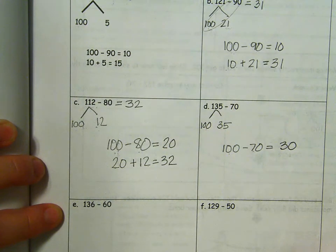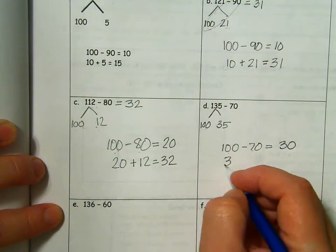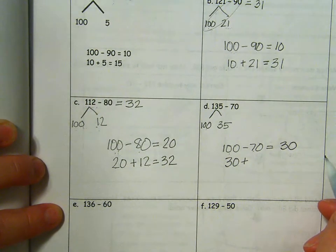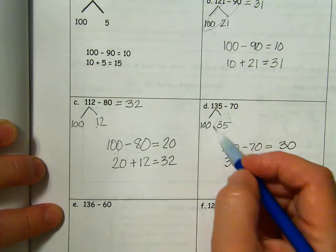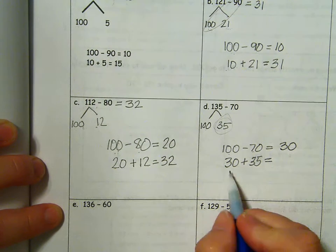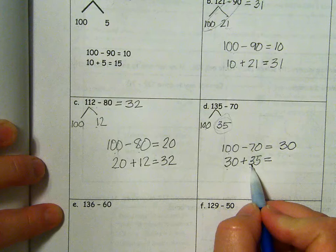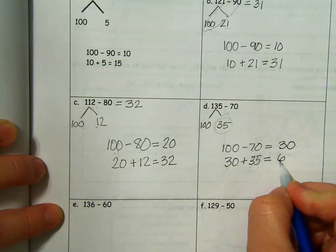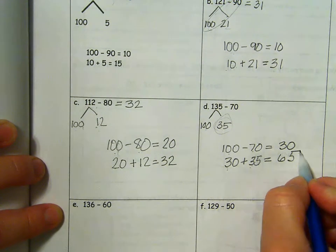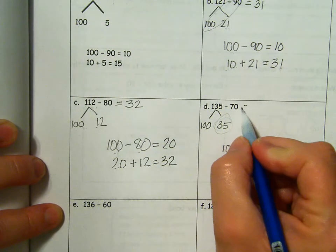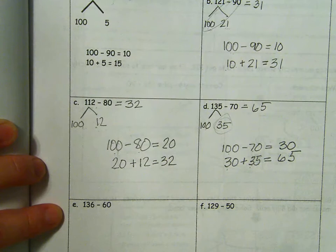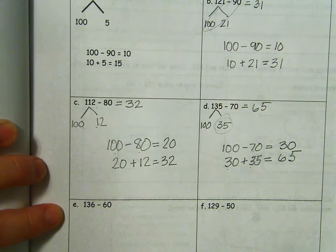30. Next step, I'm going to add 30 plus the other part, 35. 30 plus 35. I have 3 tens and 3 tens, which is 6 tens. I have 0 and 5, which is 5. 135 minus 70 is 65.